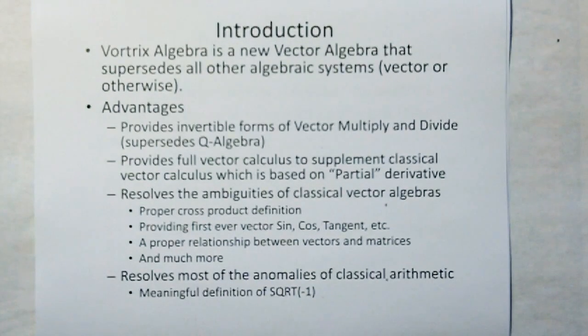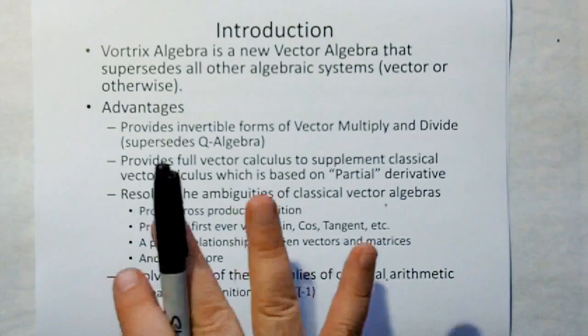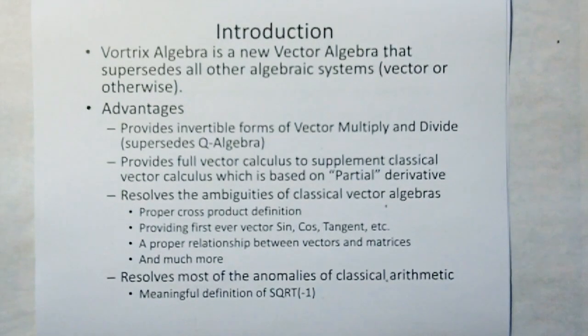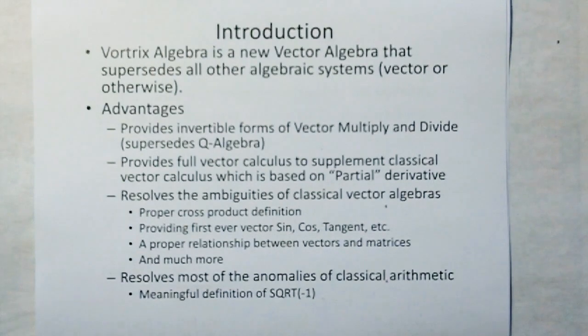It resolves the ambiguities of classical vector algebras with proper cross-product definitions, provides the first-ever vector sine, cosine, tangent, etc. It provides a proper relationship between vectors and matrices, and much more. And it resolves most of the anomalies of classical arithmetic. For example, it provides a meaningful definition to the square root of negative 1.